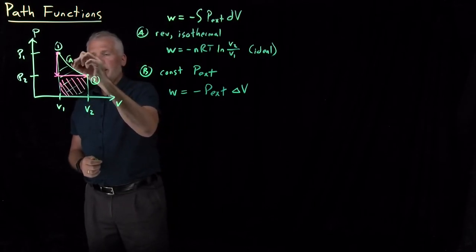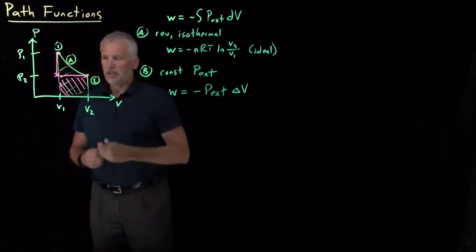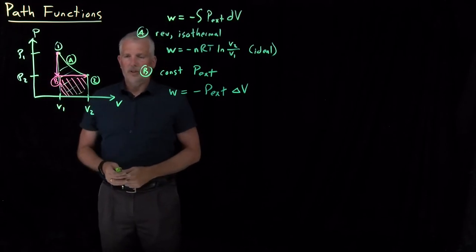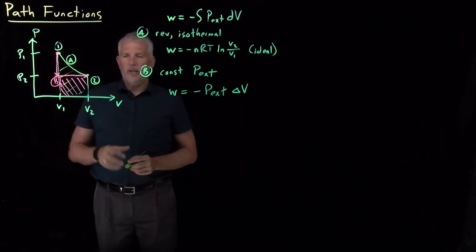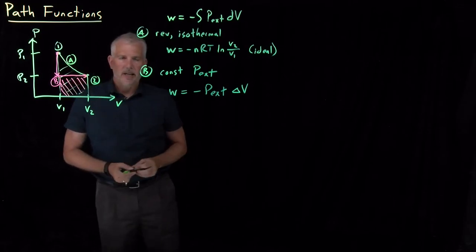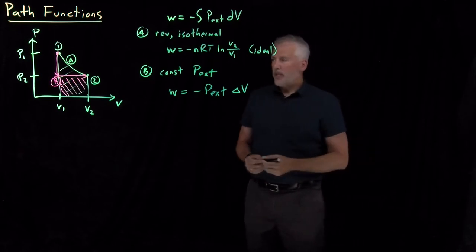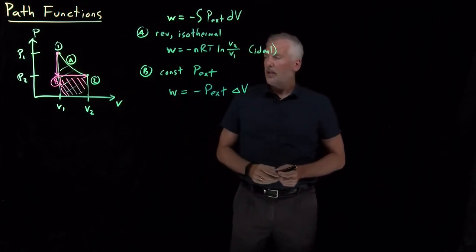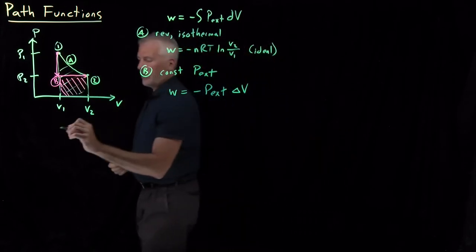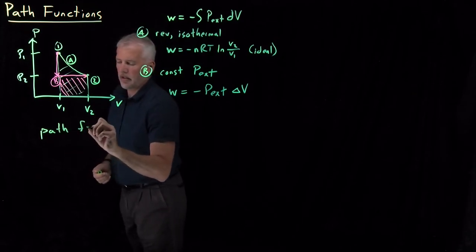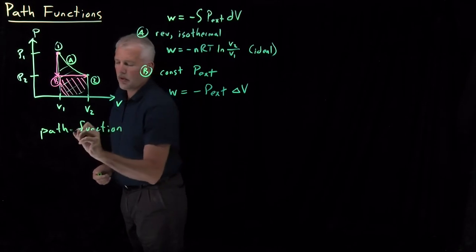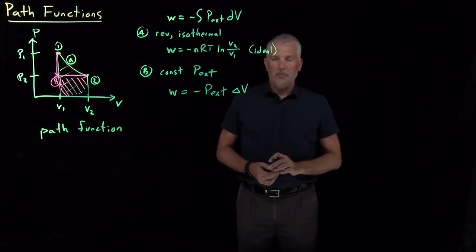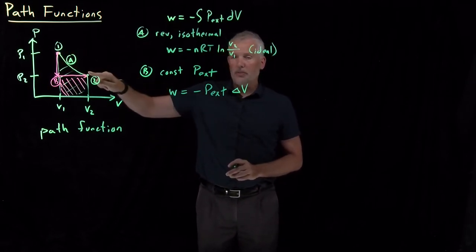It's not surprising that we get a different answer for process A and process B. Process A is the reversible isothermal expansion; process B is the drop-then-expand against constant pressure. We get different answers because the two curves whose areas we're calculating are different from each other. Properties like work, where we use different equations because we're calculating the area under different paths, are referred to as path functions — meaning we get a different value depending on the path.